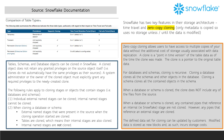When a database or schema is cloned, any contained pipes that reference an internal stage are not cloned. However, any pipes that reference an external stage are cloned.